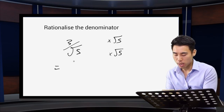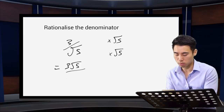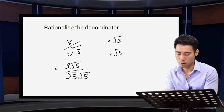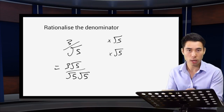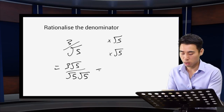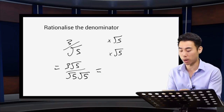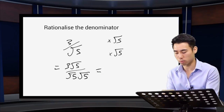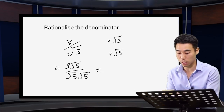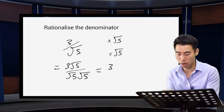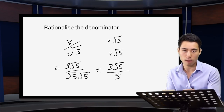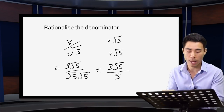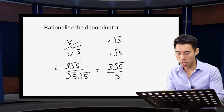What does that give us? Well, it gives us 3 root 5 on the top. On the bottom, root 5 times root 5. Working through — how has this rationalised the denominator? Well, root 5 times root 5 is just 5. So we can rewrite that as 3 root 5 all over 5. That is our denominator rationalised.